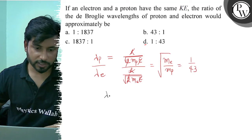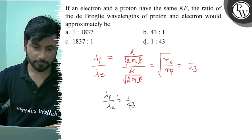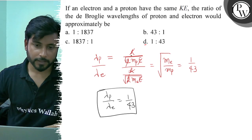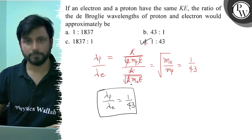So, the final answer will be lambda proton to lambda electron equals to 1 by 43. Option D, best of luck.